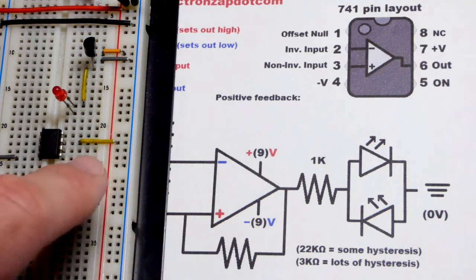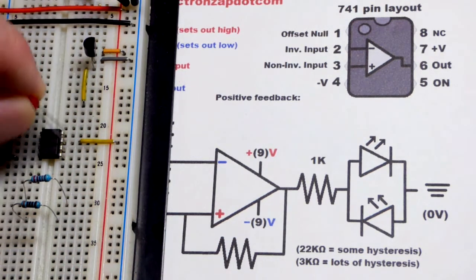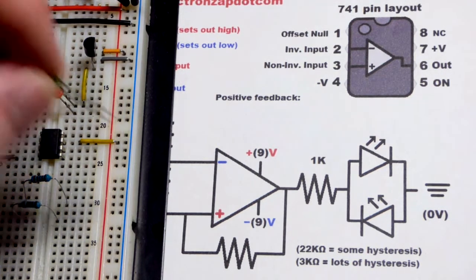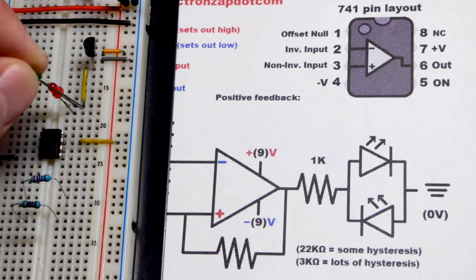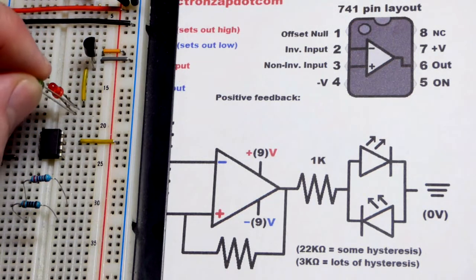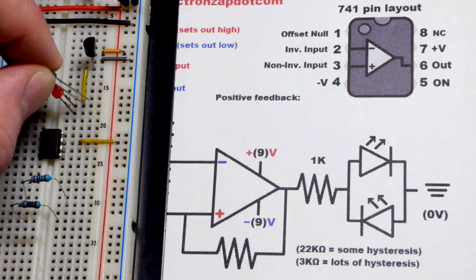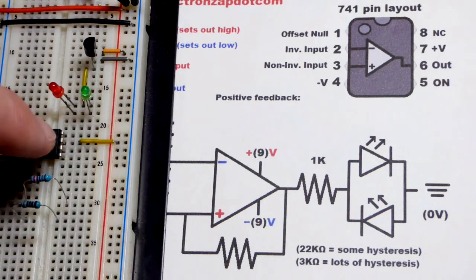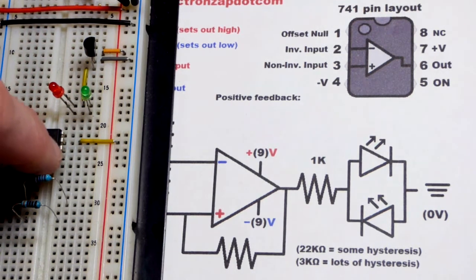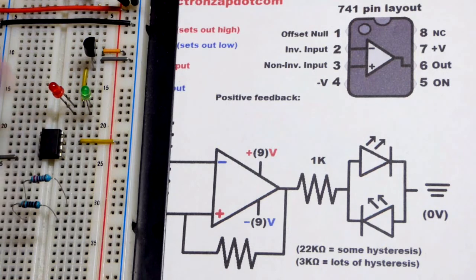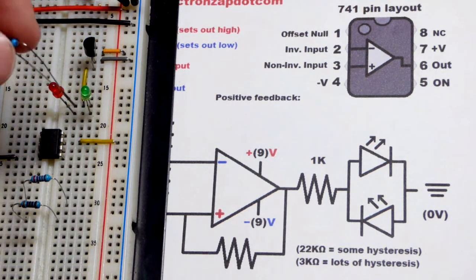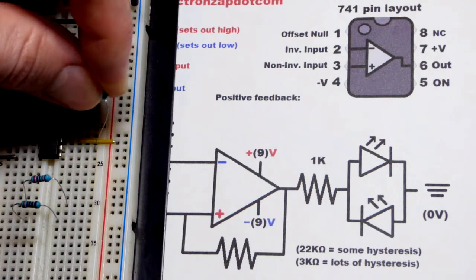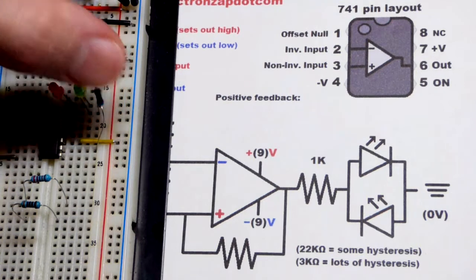I'm going to put the long lead down one row from this jumper, short lead to the jumper. This is my TLE 2426—it takes the rail voltage of 18 volts and splits it to positive nine and negative nine volts. The anode goes towards the output after we attach a resistor, and we'll do the opposite with the green LED.